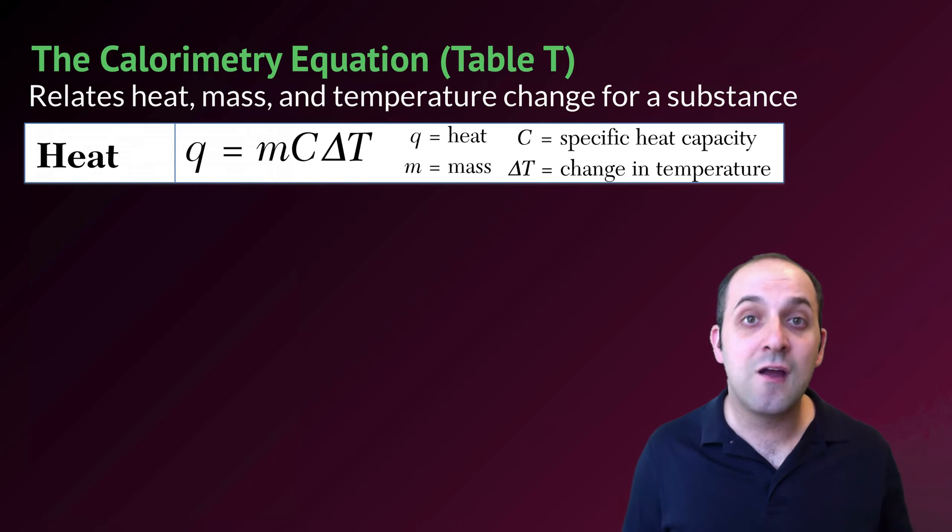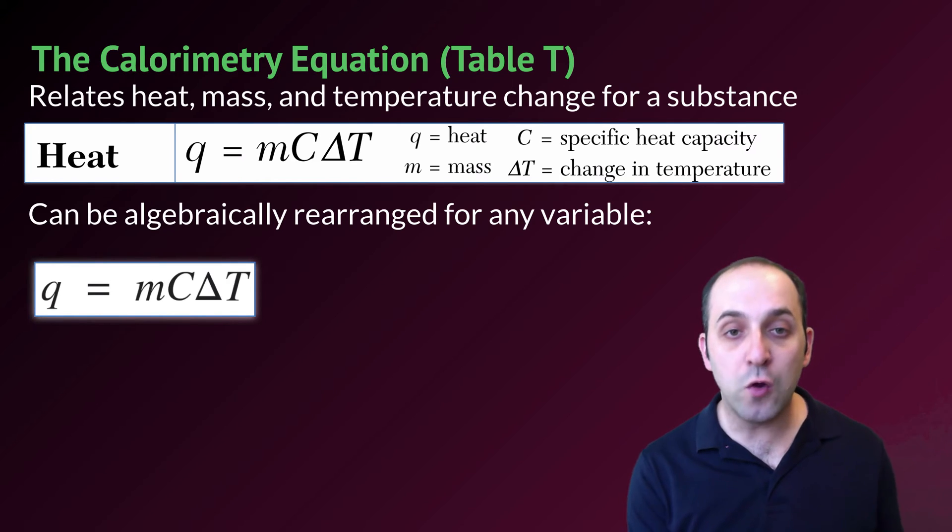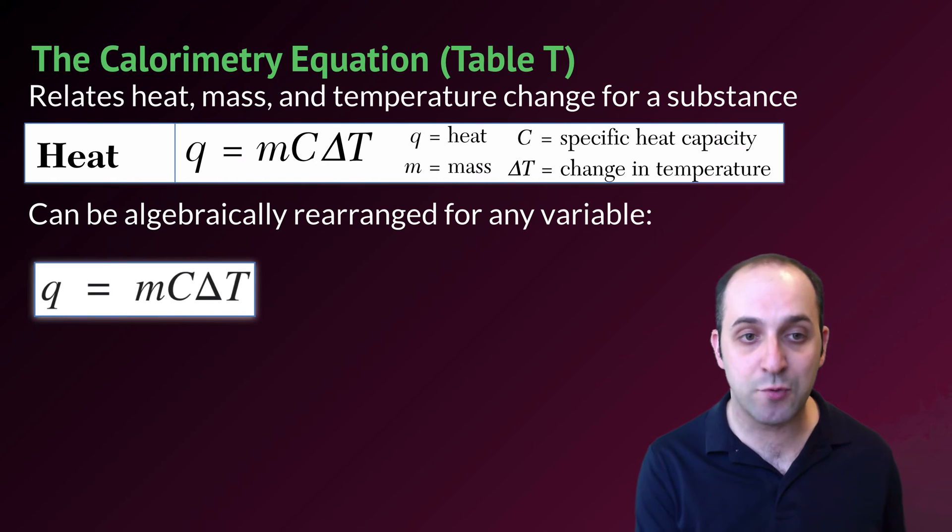Through calorimetry, you need to use the calorimetry equation. This is an equation that's going to mathematically relate the heat content of a substance, the mass of that substance, and the temperature change for that substance. This is of course given to you on reference table T. Of course, we can also rearrange this equation to solve for any one variable.